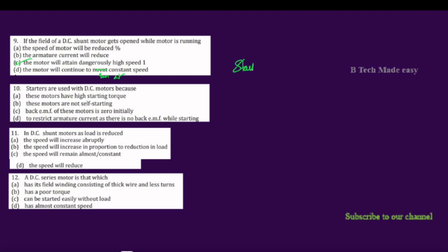The main function of a starter in a DC motor is to limit the starting current and to protect the armature. We use starters to restrict the armature current because there is no back EMF while starting. The starter limits or reduces the current since back EMF is absent at startup. This is how starters are used.